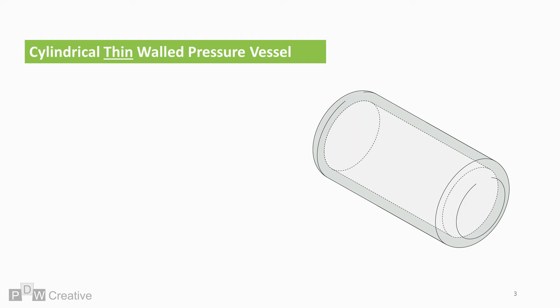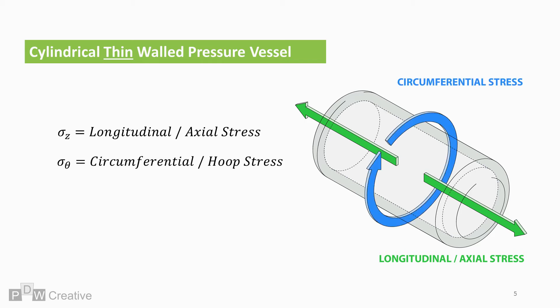Thin and thick walled vessels alike both experience longitudinal or axial stress. This type of stress is observed along the length of the cylinder. They also both experience the effects of circumferential or hoop stress. Hoop stress occurs across the circumference and attempts to stretch it out.